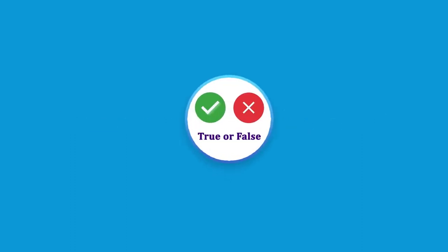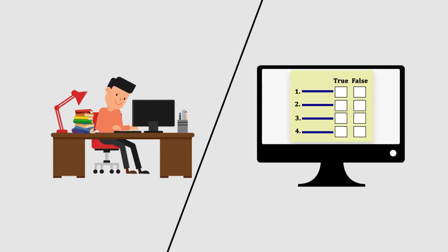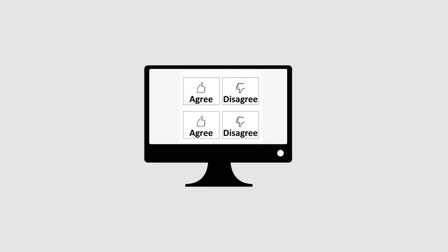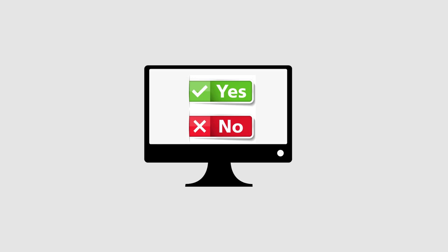Next, coming to true or false questions. For example: "State whether true or false — the source code of FreeMind is open." The student selects either true or false based on the statement, with only two options available. Apart from true or false, this format can also be agree or disagree, or yes or no, framed according to the sentence or phrase.